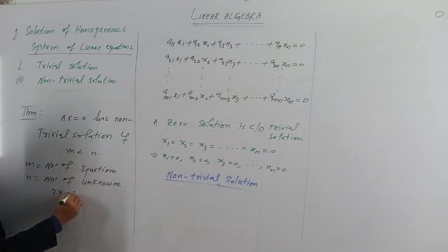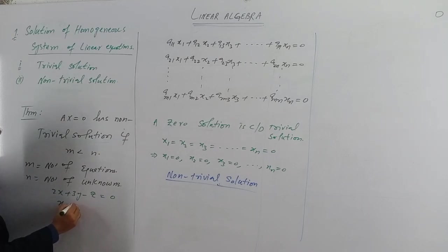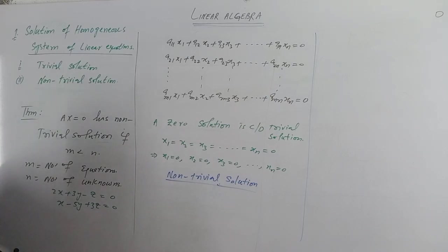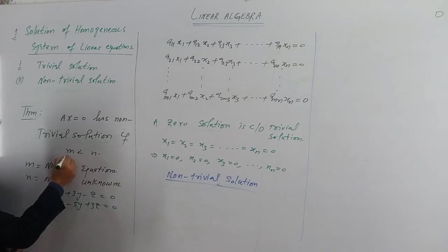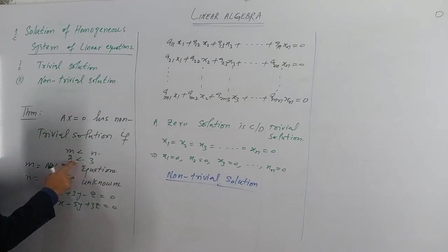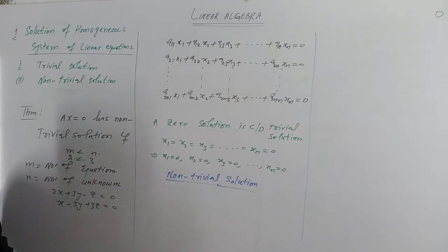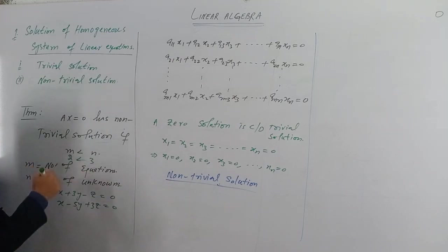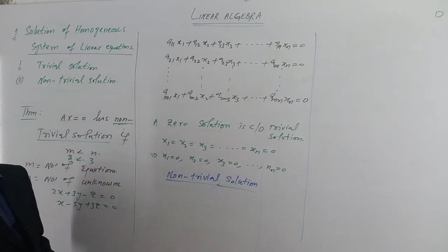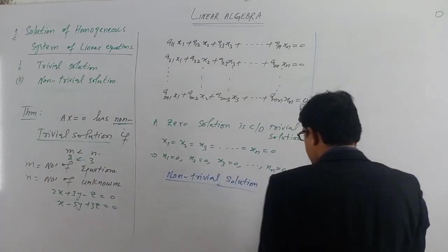For example: 2x + 3y − z = 0 and x − 5y + 3z = 0. In this system, the number of equations is 2 and the number of unknowns x, y, z is 3. Since 2 is less than 3 — number of equations is less than number of unknowns — the theorem says that the solution will always be a non-trivial solution.